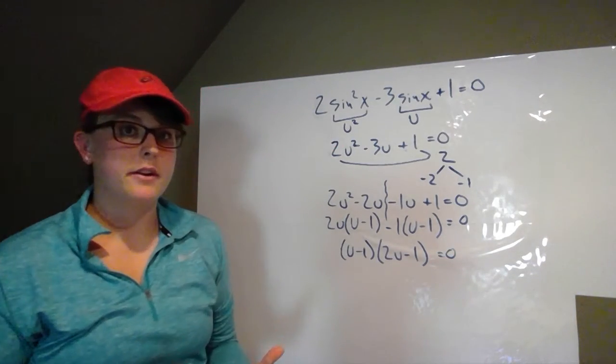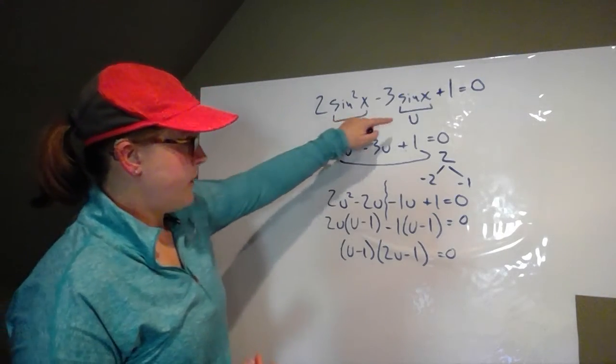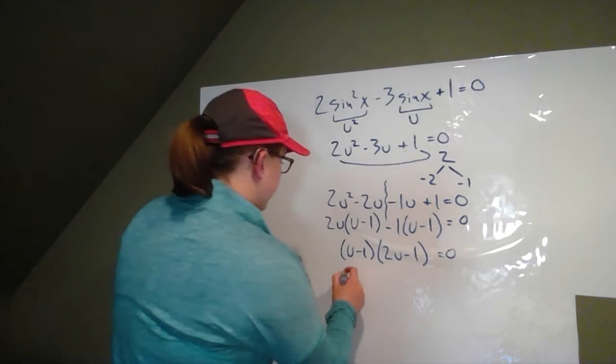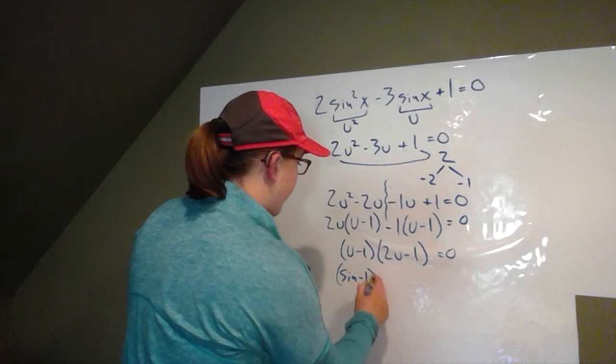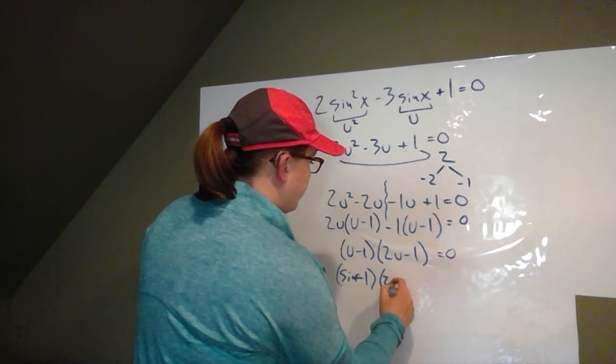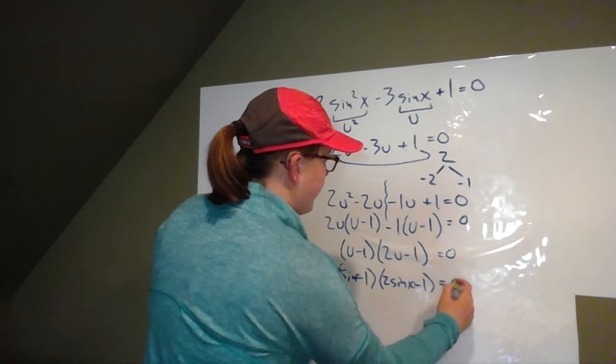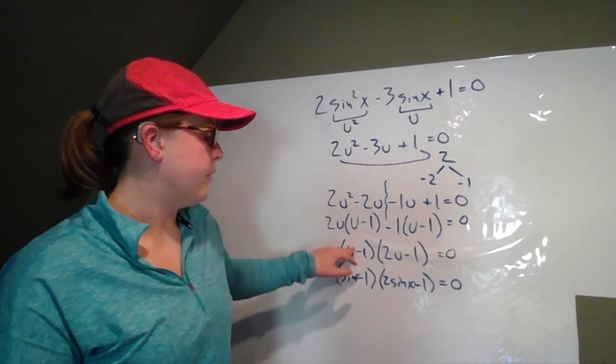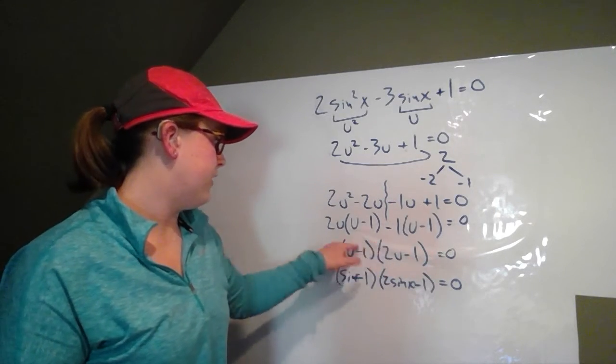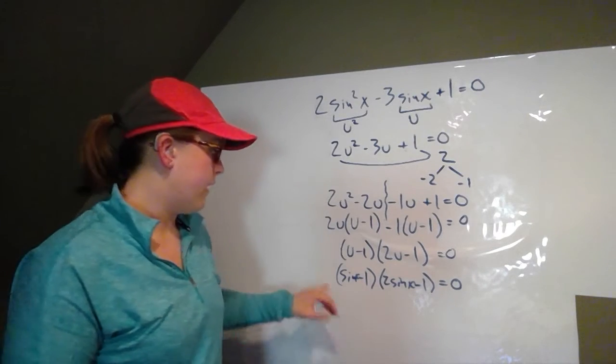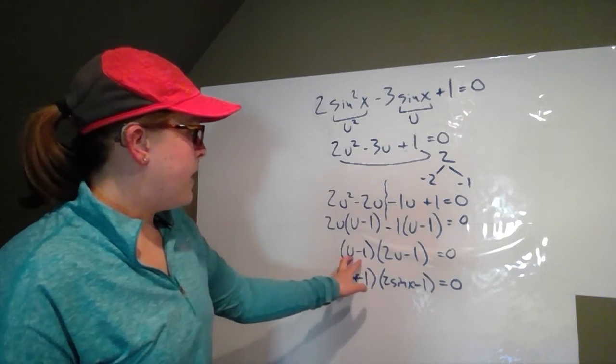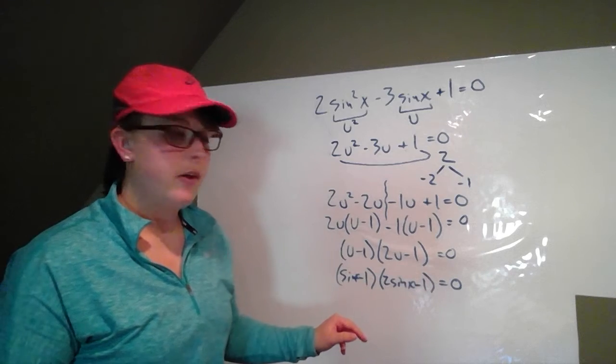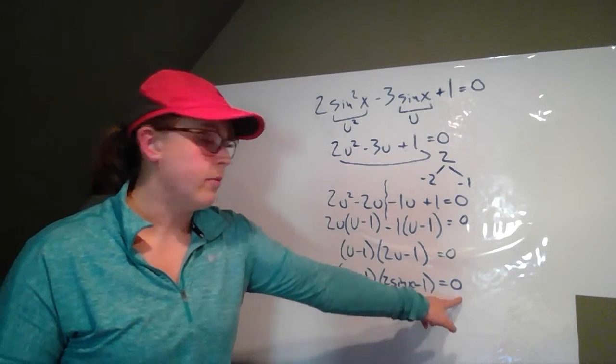So now we're all factored. And now I need to go back and substitute sine back in. So now I'm going to substitute sine back in and get sine of x minus one and two sine of x minus one equals zero. And so then just like I would set u minus one equal to zero and two u minus one equal to zero, I'm going to set sine of x minus one equal to zero and two sine of x minus one equal to zero. So we're going to go sine of x minus one equals zero.